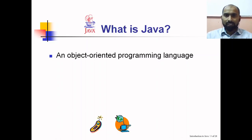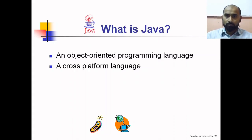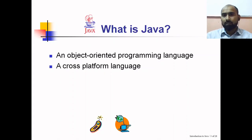Java is a cross-platform language. That simply means a program written in Java can be executed on multiple different platforms. For example, if a program is written on a Windows platform, the same program can be executed on any other platform.